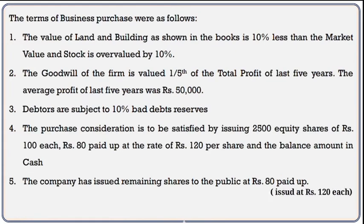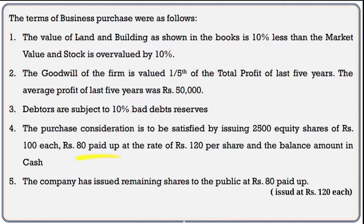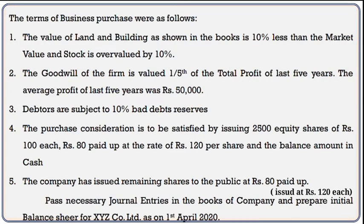Adjustment number 4: Purchase consideration is to be satisfied by issuing 2500 equity shares of Rs. 100 each, Rs. 80 paid up, at a rate of Rs. 120 per share, and the balance amount in cash. Here, 80 rupees is the amount of capital and 40 rupees is the amount of premium. The company has also issued remaining shares to the public at Rs. 80 paid up with a premium of Rs. 40, i.e., at Rs. 120 per share. From this, pass necessary journal entries in the books of the company and prepare the initial balance sheet for XYZ Company Limited as on 1st April 2020.